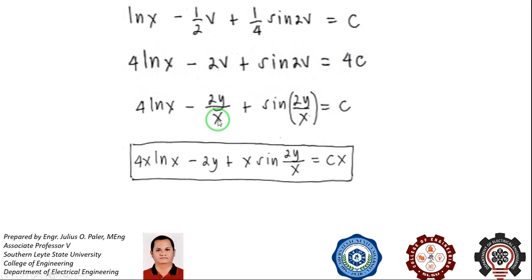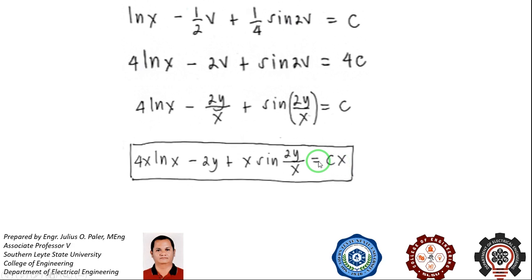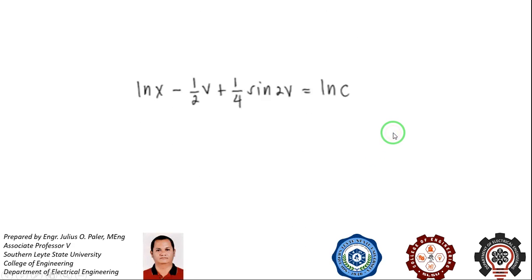Removing the denominator x in the second term, we will multiply the equation by x. This will give us 4x ln of x minus 2y plus x sine of 2y over x is equal to Cx. That is our final answer.